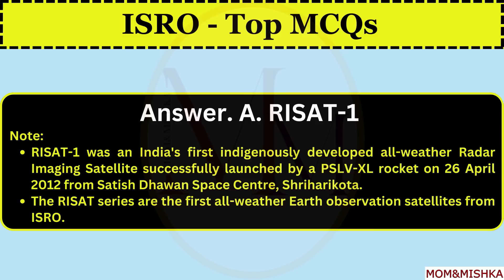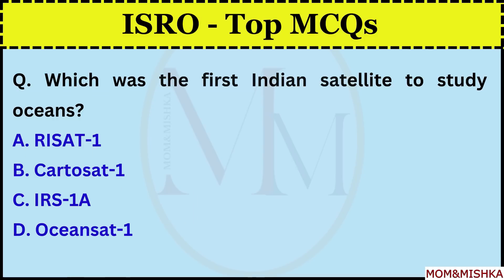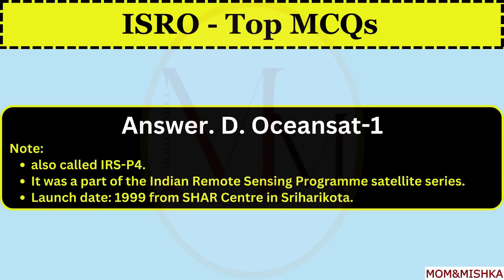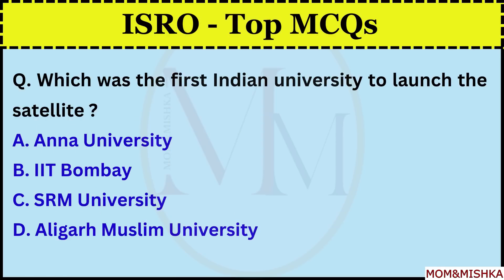The RISAT series are the first all-weather Earth observation satellites from ISRO. Which was the first Indian satellite to study oceans? OceanSat-1, option D, also called IRS P4. It was part of the Indian Remote Sensing Program satellite series. It was launched in 1999 from SHAR Center in Sriharikota.